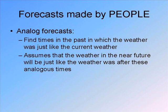We don't actually explicitly do analog forecasting day to day, although it is sort of implicitly part of what we're doing because it's human nature — we use our past experiences to inform us about what the future is going to be like. The meteorologist sitting in his office thinks about times he's seen a similar weather pattern and what played out. Analog forecasts are very common in climate forecasting.